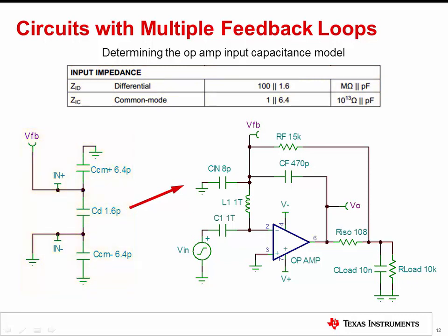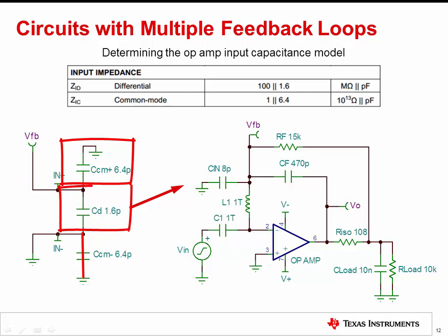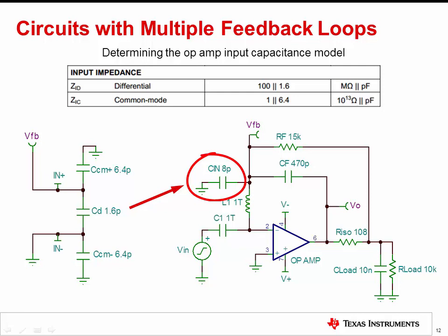In this circuit, the non-inverting input is grounded, so the negative common mode capacitor is shorted out, and the positive common mode capacitor and differential input capacitor are in parallel with each other. The parallel sum of the two capacitors is 8 picofarads and should be added to the circuit above the inductor as shown.